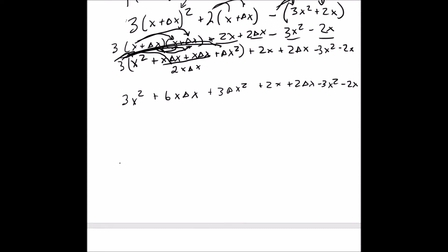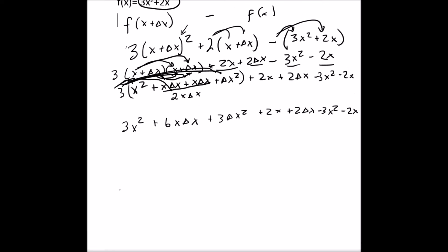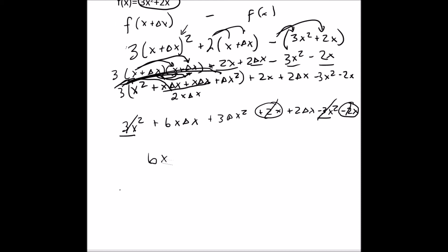Now we combine like terms. We have a 3x squared and a minus 3x squared — those cancel out. We have a minus 2x and a plus 2x — those cancel out too. So what we're left with is 6x·Δx plus 3·Δx squared plus 2·Δx.